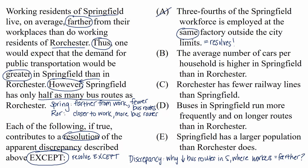Choice B: the average number of cars per household is higher in Springfield than in Rochester. This contributes to a resolution. If Springfield households have a higher number of cars than Rochester households, then Springfield may just not need public transportation as much as Rochester does, since more Springfield people can just drive to work. Choice C: Rochester has fewer railway lines than Springfield. It helps resolve the discrepancy because if Springfield has more railway lines than Rochester, then that might explain why they have fewer bus routes — people could just be taking the railway instead of the bus.